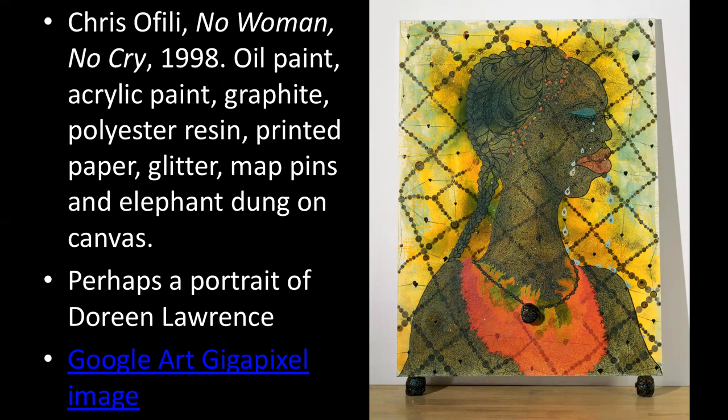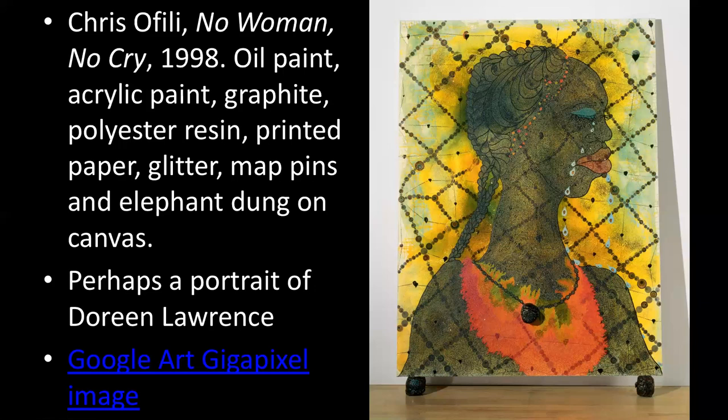The Google Art Gigapixel project — developed in the late 1990s and early 2000s using extremely high-resolution digital imaging devices — used this picture by Chris Ofili, 'No Woman No Cry,' as the first Google Art Gigapixel image. You can see why: you can go to Google Art Gigapixel and look up 'No Woman No Cry' to check out how it works. Ofili's works are extremely detailed — basically collages or mosaics — making this the perfect format to show the type of art he makes.